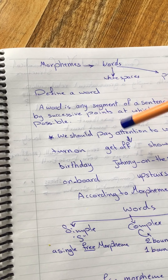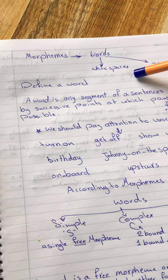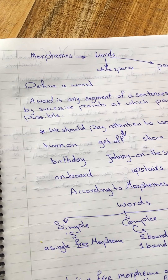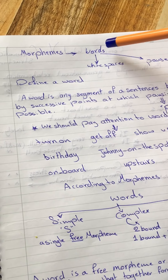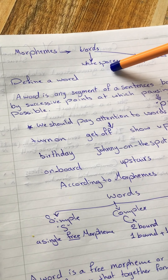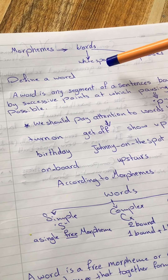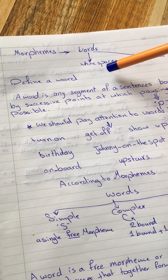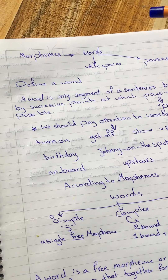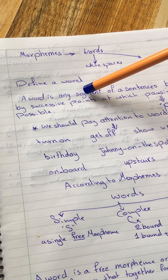We will cover its definition — what is a word — and how we can classify words into different types according to morphemes. First of all, if we are talking about words in writing, we can identify words through white spaces, because there is a space between one word and another.